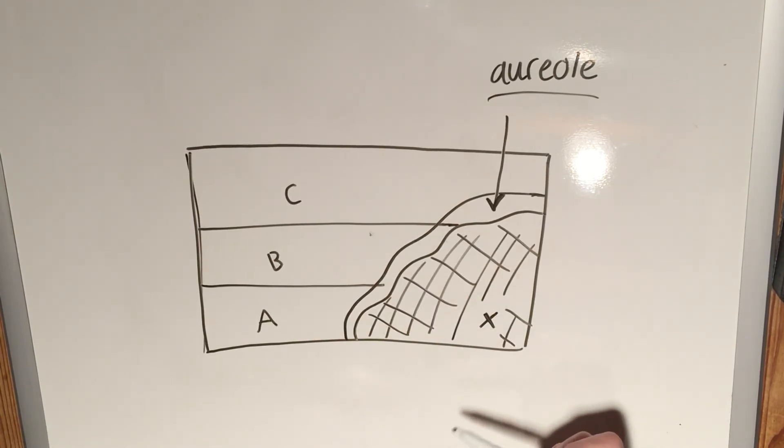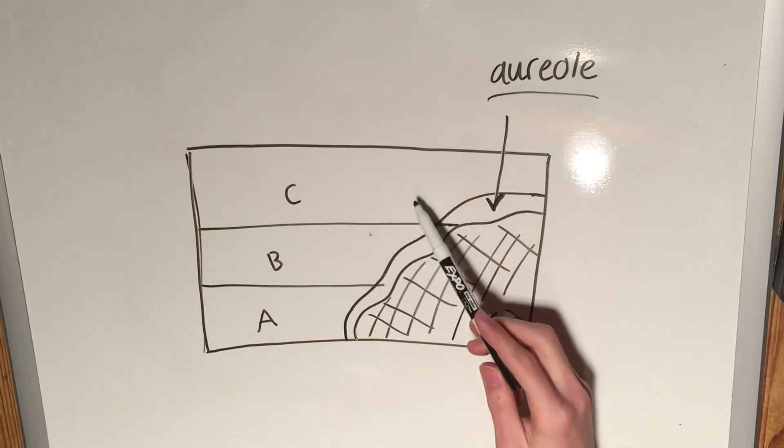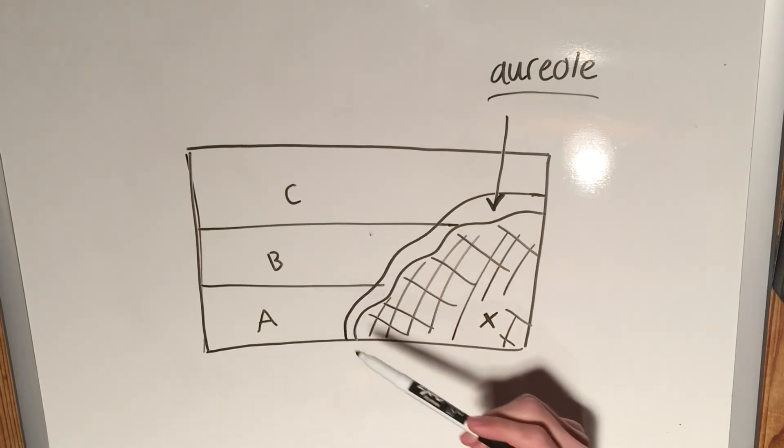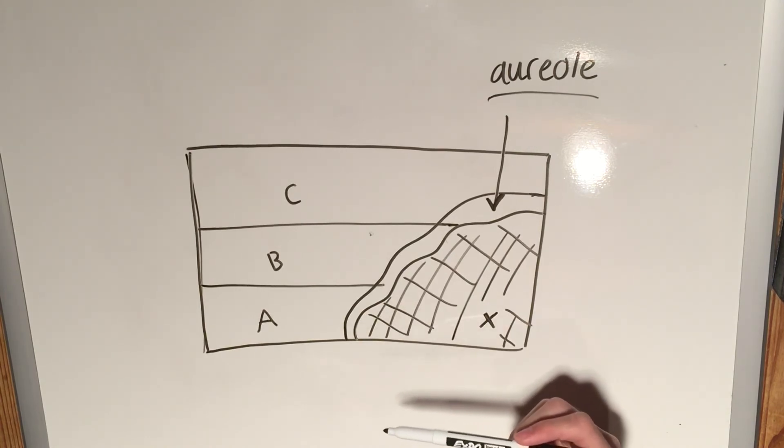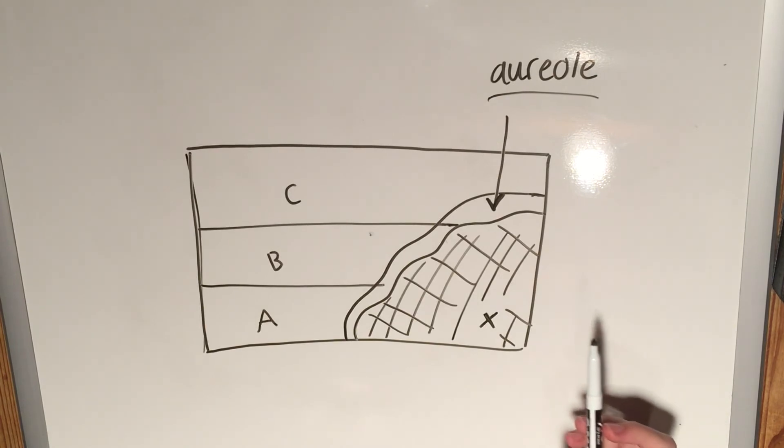One final note about contact metamorphism: because it occurs with basically only temperature, in that the only pressure that will occur at these levels is smaller amounts of confining pressures, you'll generally see that these metamorphic rocks are low grade and typically aren't striated. There won't be enough pressure to have forced the layers of, for example, hornblend to align nice and neatly.